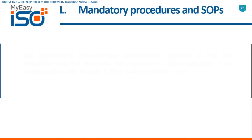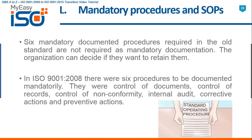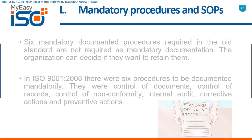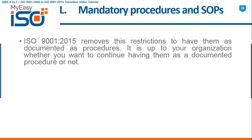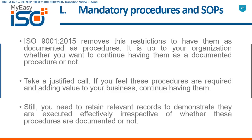L. Mandatory Procedures and SOPs. The six mandatory documented procedures required in the old standard are not required as mandatory documentation. The organization can decide if they want to retain them. In ISO 9001 2008, the six mandatory documented procedures were: control of documents, control of records, control of nonconformity, internal audit, corrective actions, and preventive actions. ISO 9001 2015 removes this restriction. Take a justified call — if you feel these procedures are required and adding value to your business, continue having them. Still, you need to retain relevant records to demonstrate they are executed effectively, irrespective of whether these procedures are documented or not.